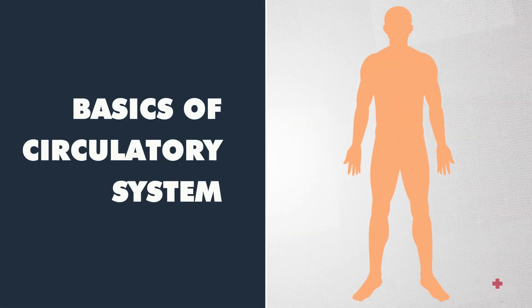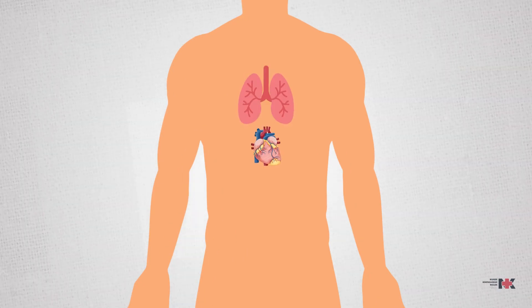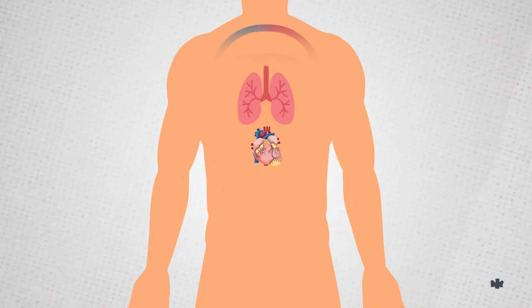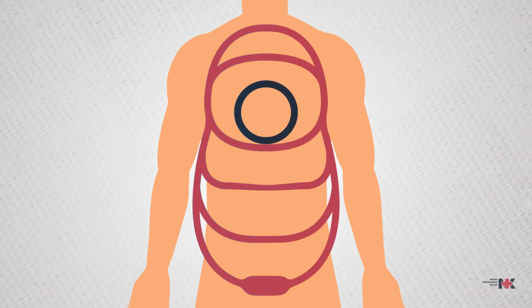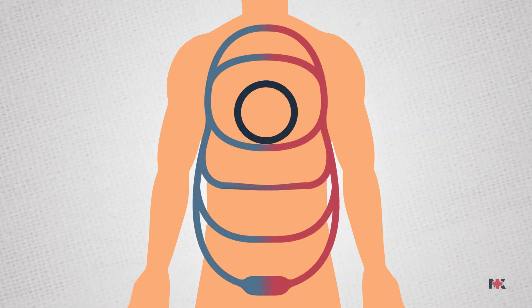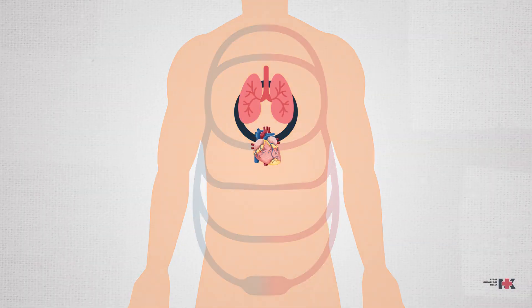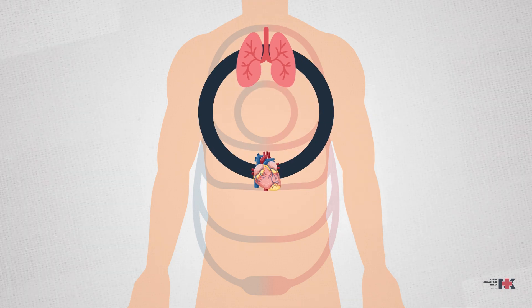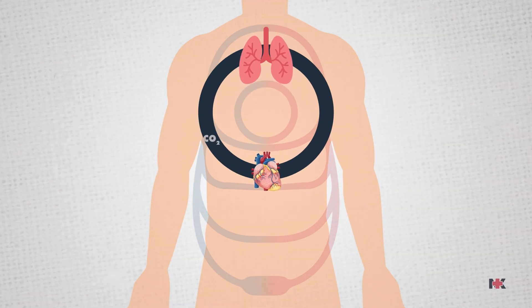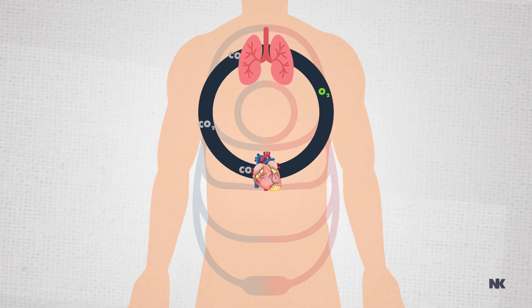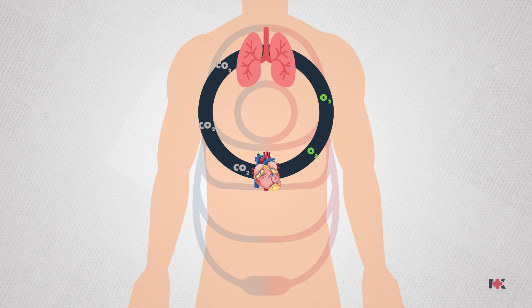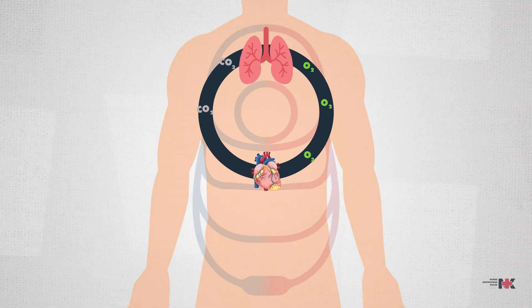Let's discuss the basics of our circulatory system to review the connection of our heart and lungs. Our circulatory system is in a closed loop or circuit, but it can be divided into two circuits. We have first the pulmonary circuit, which carries deoxygenated blood away from your heart, delivers it to your lungs where it picks up oxygen, and then returns the oxygenated blood to your heart.